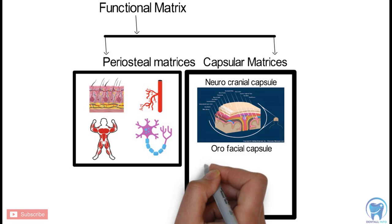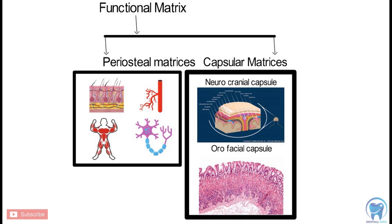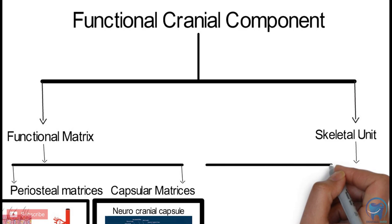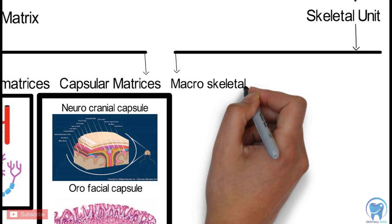The Skeletal Unit can also be divided into two parts. First is the Macroskeletal Unit. For example, the Mandible.